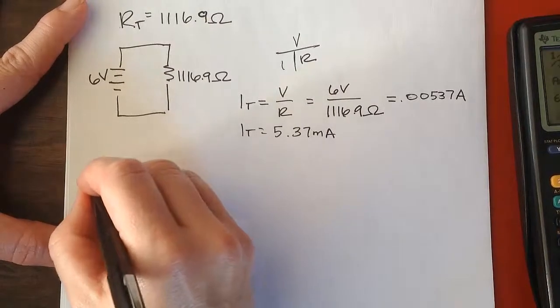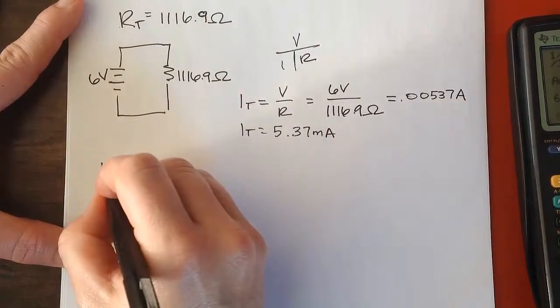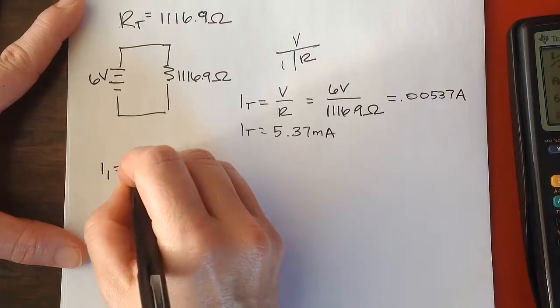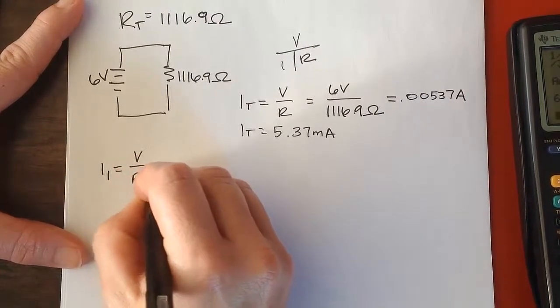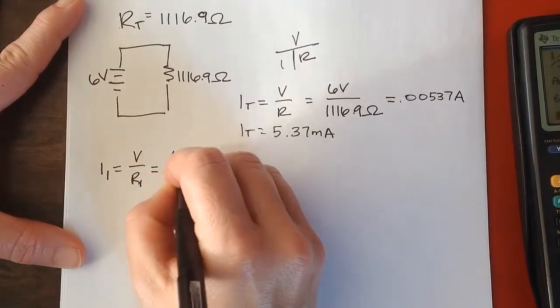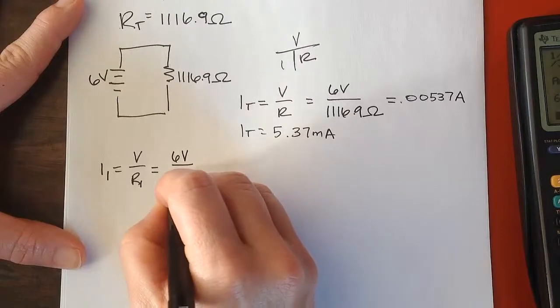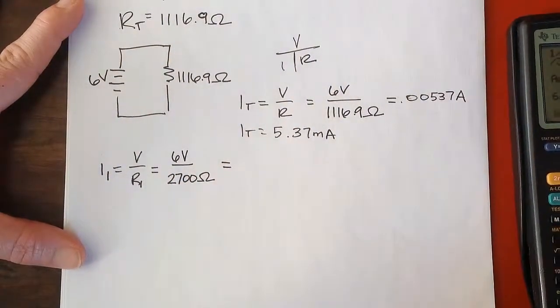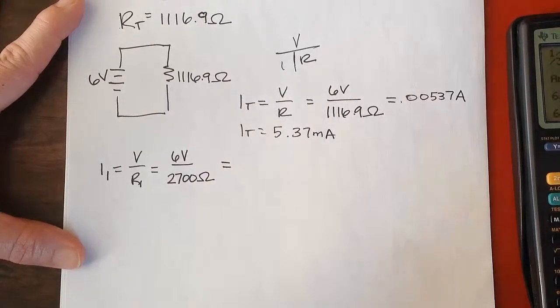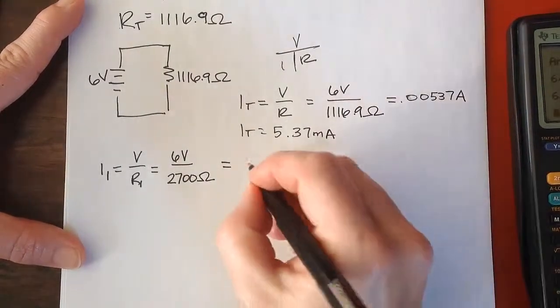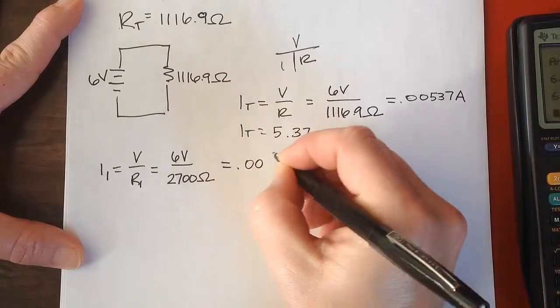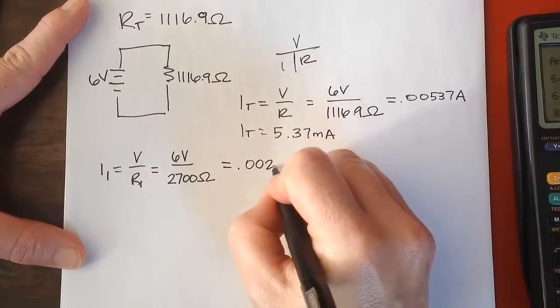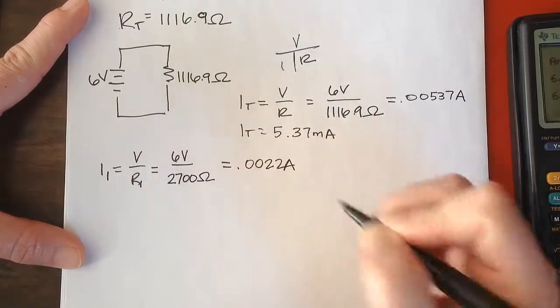If I say I1 is equal to V over R1, that's going to be 6 volts divided by 2,700 ohms. I get 0.002 amps.